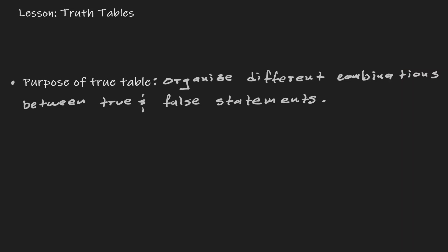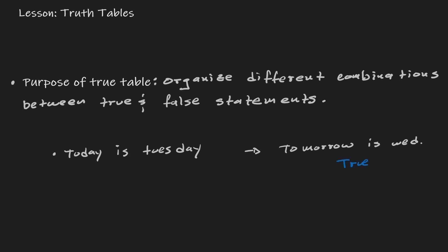What do we mean by true and false statements? Let's say that today is Tuesday and I tell you that tomorrow is Wednesday — well, this is definitely true. But what if I tell you, still assuming today is Tuesday, that tomorrow is Saturday? Well, this is definitely false. So by true and false statements, we actually refer to true and false statements within our reality. If you take a look at the sky and I tell you the sky is purple, obviously that's false. And if I tell you the sky is blue, then that is true.